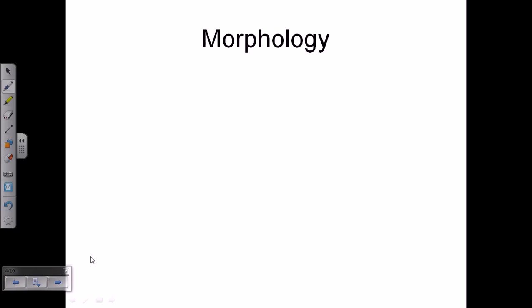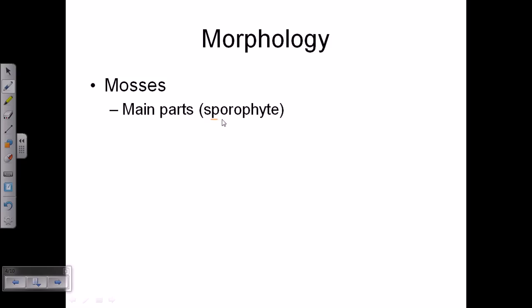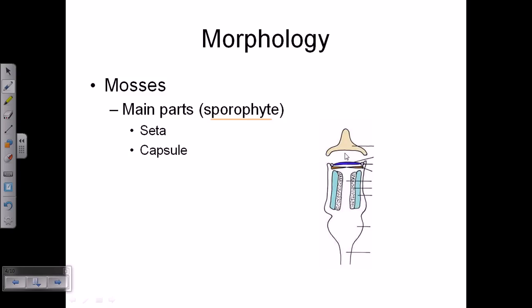Looking at mosses: the gametophytes are the main parts, and the sporophyte is dependent upon the gametophyte. In the sporophyte generation of moss we can find the capsule and the seta, which is a cap on the capsule. Inside the capsule, spores are produced. After the gametophyte generation, the gametes give rise to spores, and spores again give rise to gametophytes — a circular process called alternation of generations.